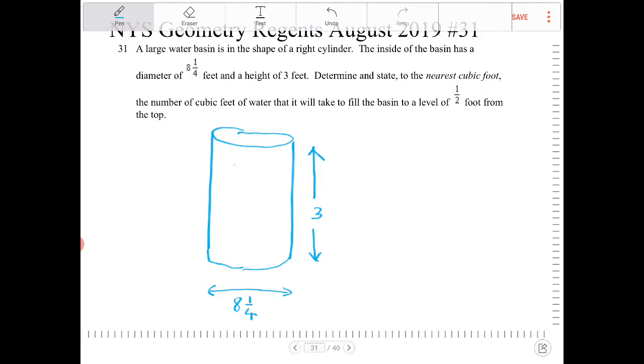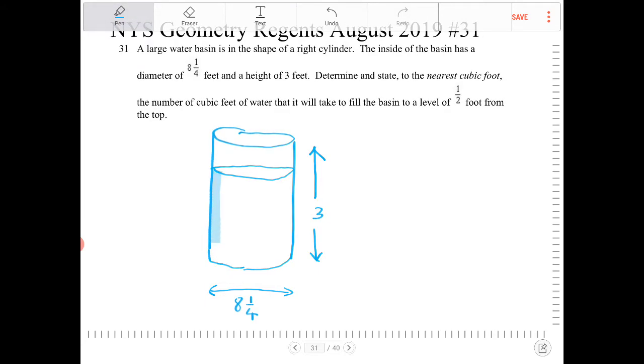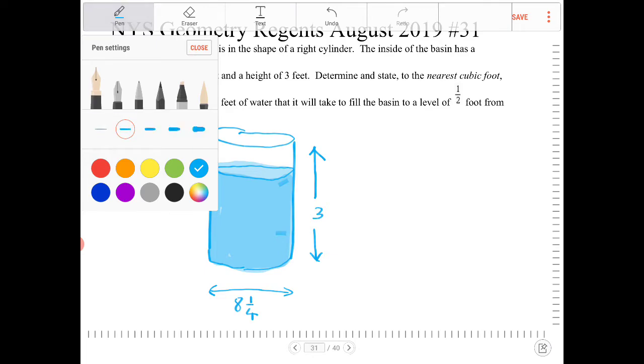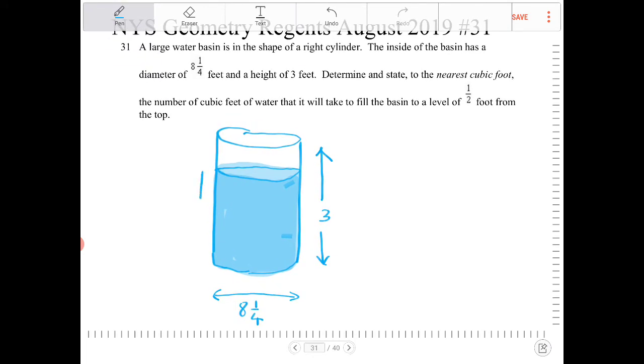And the amount of water that's in the basin right now, that's right there, which I'm going to shade in. So the water that's in the basin is half a foot away from the top. So what is that dimension then? Well if that's the case then that means the water here is going to be two and a half feet.